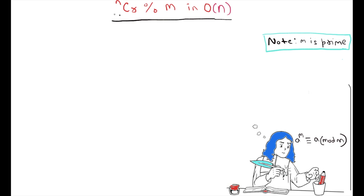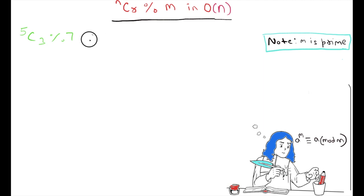Today we will see how to calculate NCR modulo M in O(N) complexity. For example, if we have to calculate 5C3 modulo 7, then how to calculate this in O(N). First we will see how modulo works on division and multiplication.